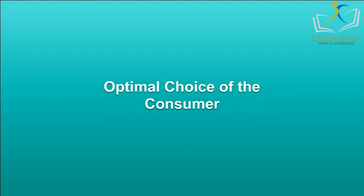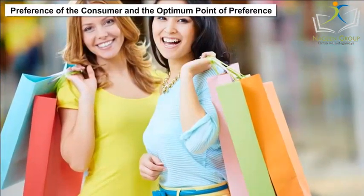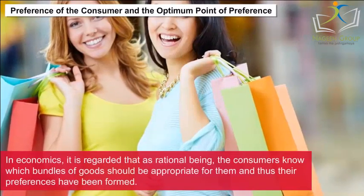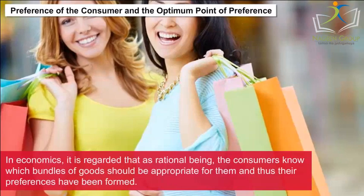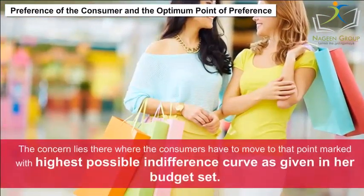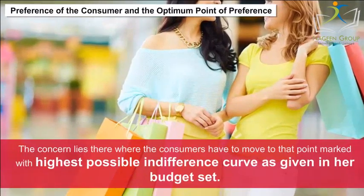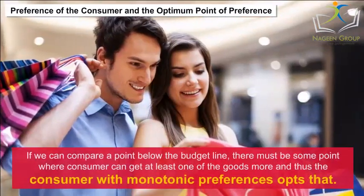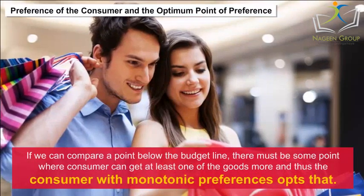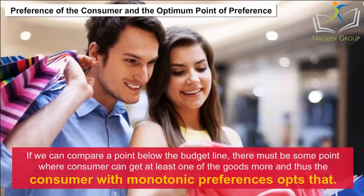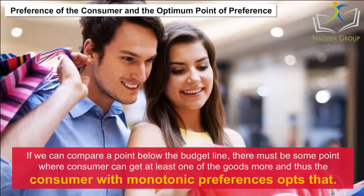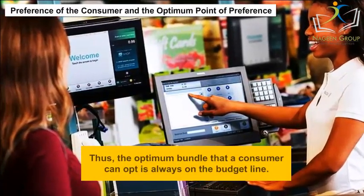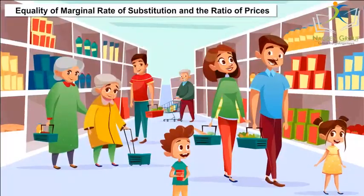Optimal Choice of the Consumer. In economics, it is regarded that as rational beings, consumers know which bundles of goods should be appropriate for them and thus their preferences have been formed. The concern is that consumers have to move to the point marked with the highest possible indifference curve given the budget set. If we compare a point below the budget line, there must be some point where the consumer can get at least one good more. Thus, the consumer with monotonic preferences opts for the point that is on the budget line — the optimum bundle is always on the budget line.